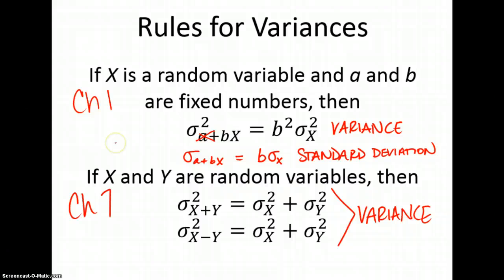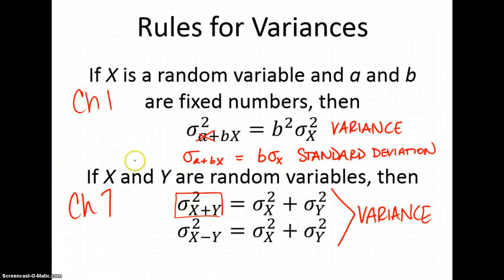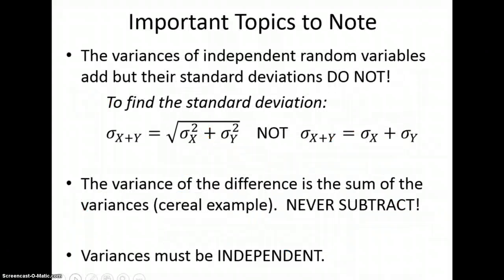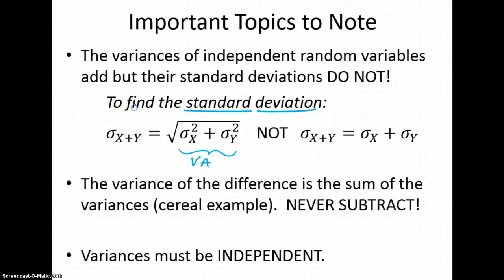What if we're combining two random variables? This is Chapter 7. We must be working in variance here. In Chapter 1 you can choose variance or standard deviation — it works both ways. That does not work here. If we're adding two random variables, we add their two variances. If we are subtracting two random variables, we are also adding their variances — this is not a typo. You are always adding variances. You never subtract variances. Things don't vary less by combining them.